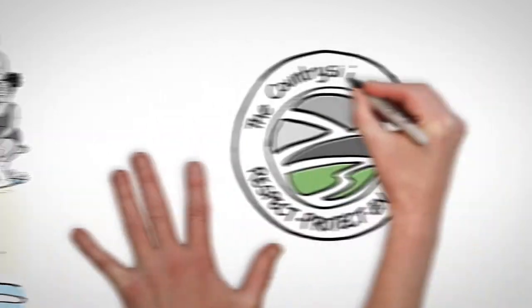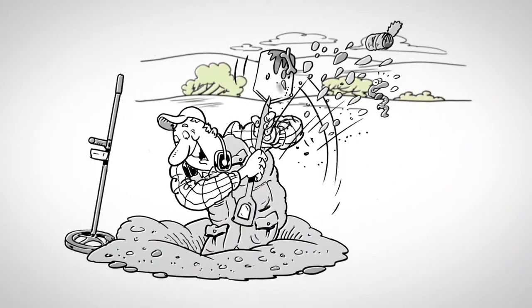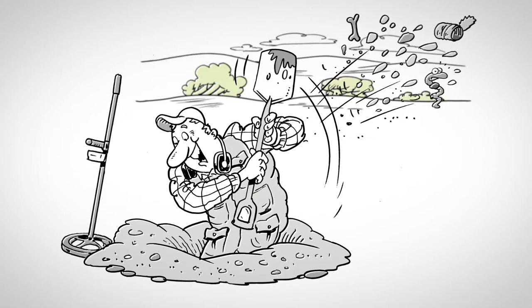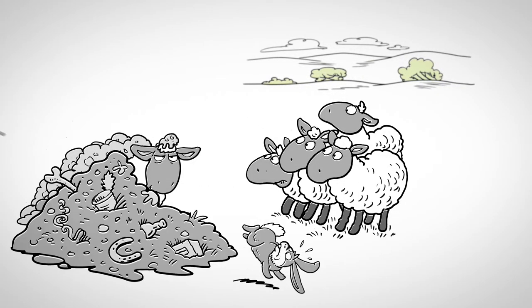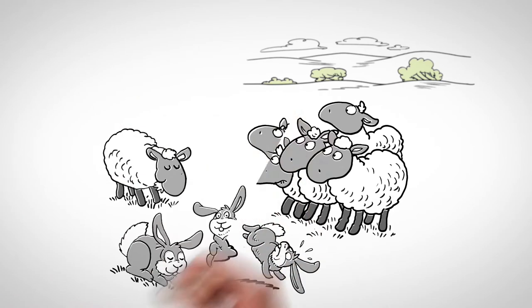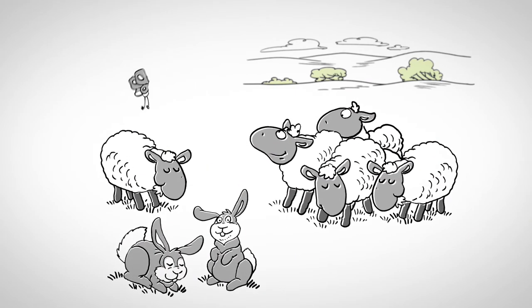Robby needs to follow the countryside code and not block land access, damage crops or disturb animals. He must dig carefully and reinstate the ground as he found it, disposing of any rubbish responsibly.